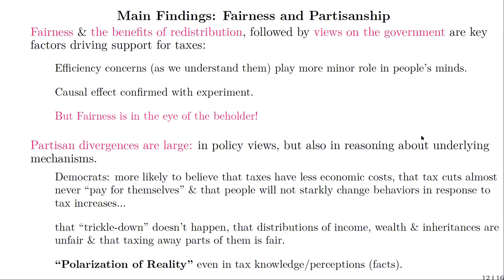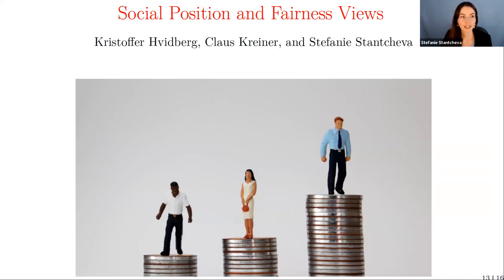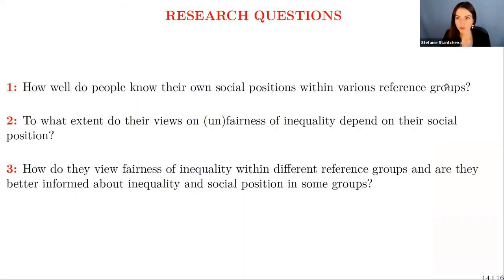In the interest of time, let me give a brief summary of the fourth and final project. With Christopher Hudberg and Claus Kreiner, this project is on social positions and fairness views. The questions are: how well do people know their own social position within various reference groups — people with the same education, age, or living in the same city? To what extent do views on position interact with views on fairness or the role of effort? And does it matter more which reference group you use — same education versus same age?